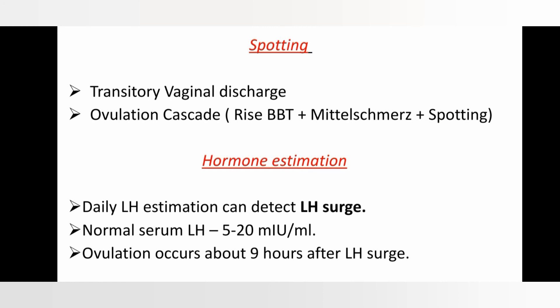Another indication of ovulation is hormone estimation. We know that LH surge occurs just prior to ovulation. Therefore, by daily estimation of plasma LH in the periovulatory period, we can accurately detect the day of ovulation. Normal serum LH is 5 to 20 milli-international units per ml, and ovulation usually occurs about nine hours after the LH surge.